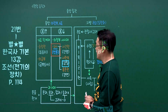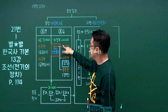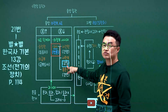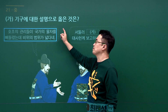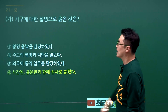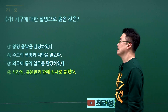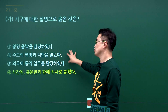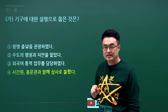조선 사헌부 문제입니다. 사헌부의 기능은 감찰이며 3사에 속합니다. 3사는 사간원, 사헌부, 홍문관입니다. 문제에서 호조 관리들이 국가의 물자를 빼돌렸다는 상황에서 감찰 기구가 필요하고, 그 사헌부는 3사로 불렸습니다. 4번을 고르시면 됩니다. 왕명출납을 관장한 곳은 승정원, 수도의 행정과 치안은 한성부, 외국어 통역은 사역원입니다. 정답은 4번입니다.